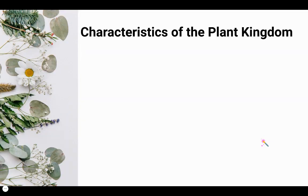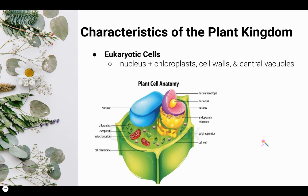We are going to be looking at the five characteristics of the plant kingdom that plants share in common. Most of this should be review from first semester. The first thing they share in common is that all plants are eukaryotic cells. This means that they contain a nucleus. Just like animal cells, plant cells have specialized organelles — most specifically chloroplasts, which allow them to photosynthesize.